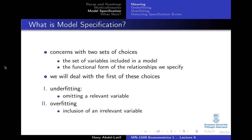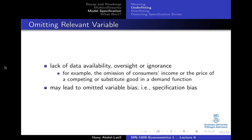For some reason you did not include such variables. On the other side, the overfitted model is the case where you include irrelevant variables. With the first case, omitting a relevant variable could be because you don't have enough data or you don't have enough information about the dependent variable and how it is determined.